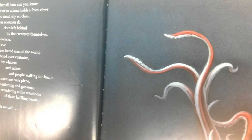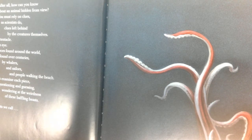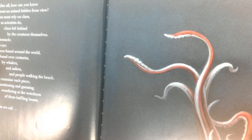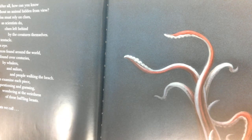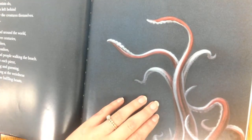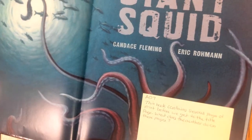After all, how can you know about an animal hidden from view? You must rely on clues, as scientists do — clues left behind by the creatures themselves: a tentacle, an eye, pieces found around the world, found over centuries by whalers and sailors and people walking the beach. You examine each piece, questioning and guessing, wondering at the weirdness of this baffling beast — beast we call Giant Squid.